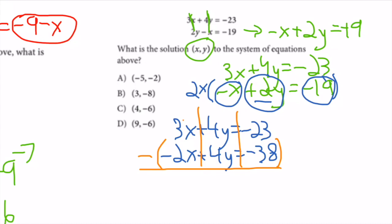I have 3x minus (-2x): two negatives make a positive, so I get 3x + 2x = 5x. And -23 minus (-38) = -23 + 38 = positive 15.